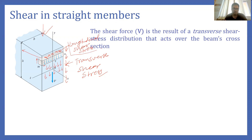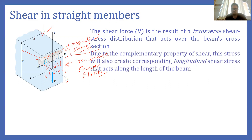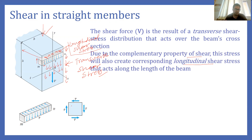The longitudinal shear stress is generated because of the complementary property of shear stress. Due to complementary properties, the transverse shear stress also creates a corresponding longitudinal shear stress that acts along the length of the beam. If we separate this element, on one face we have downward force and on the opposite face upward shear stress. The other two faces carry the longitudinal shear stress due to complementary action.